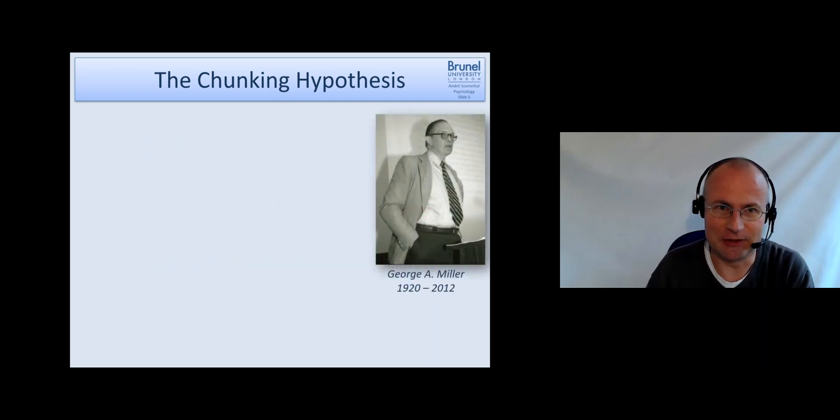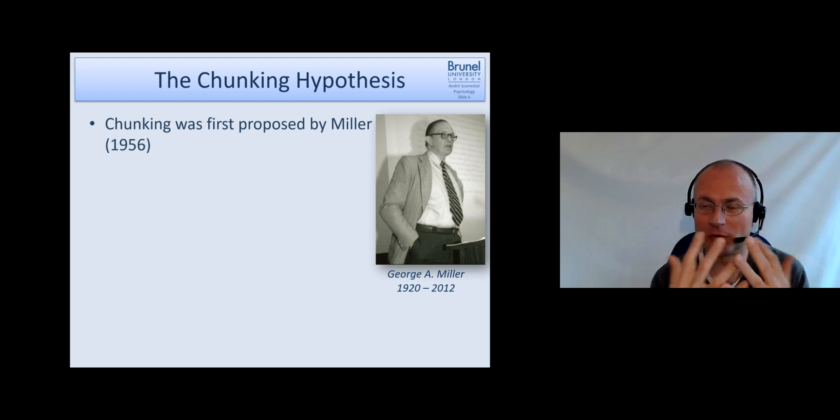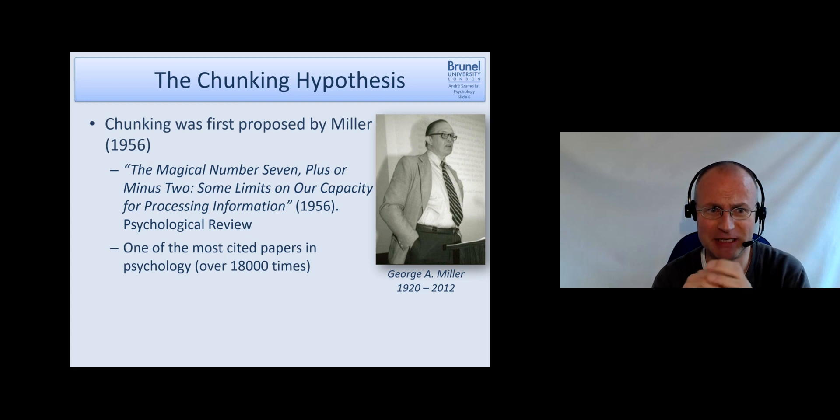So this idea of chunking was first proposed by Miller in 1956. This paper is also one of the first key papers which helped introduce cognitive psychology as a discipline, part of the cognitive revolution. He entitled it The Magical Number Seven Plus or Minus Two: Some Limits on Our Capacity for Processing Information. It's probably one of the most cited papers in psychology. A couple of years ago when I checked it was cited over 18,000 times.